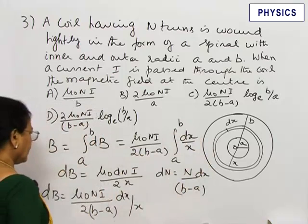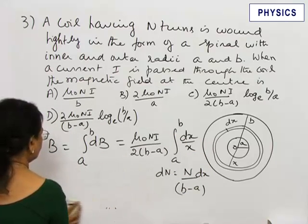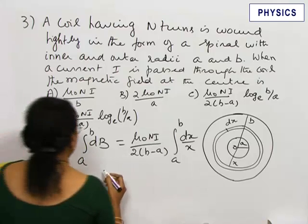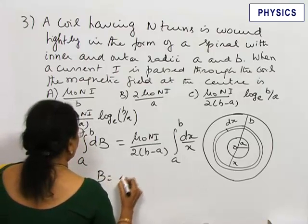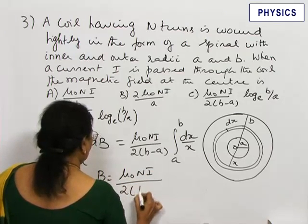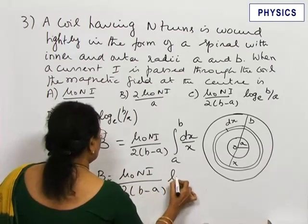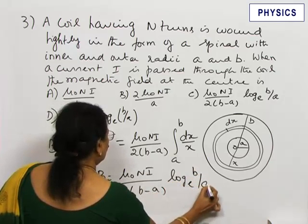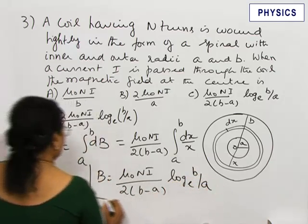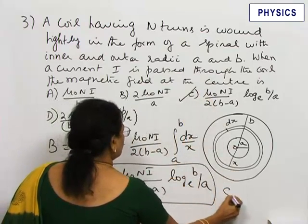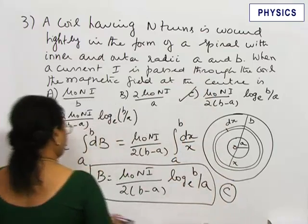After integrating and substituting the limits, B equals mu naught n i by 2 B minus A log to the base e B by A. This is the correct choice, and C is the correct option.